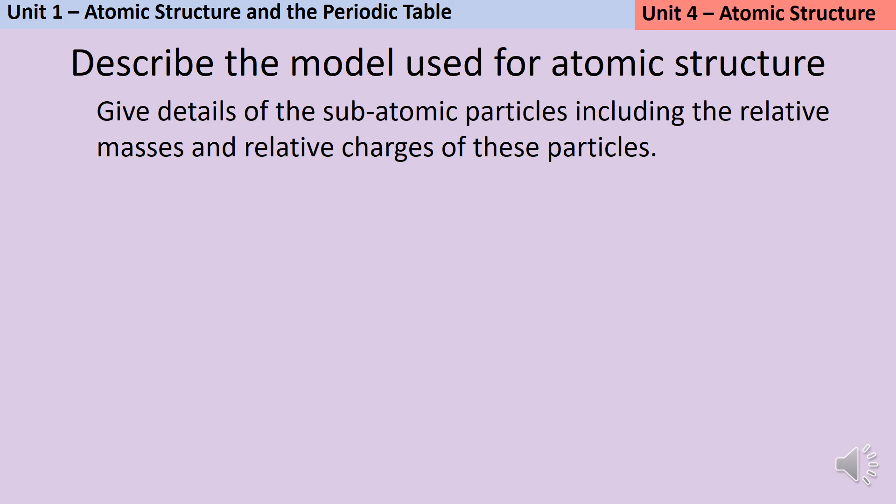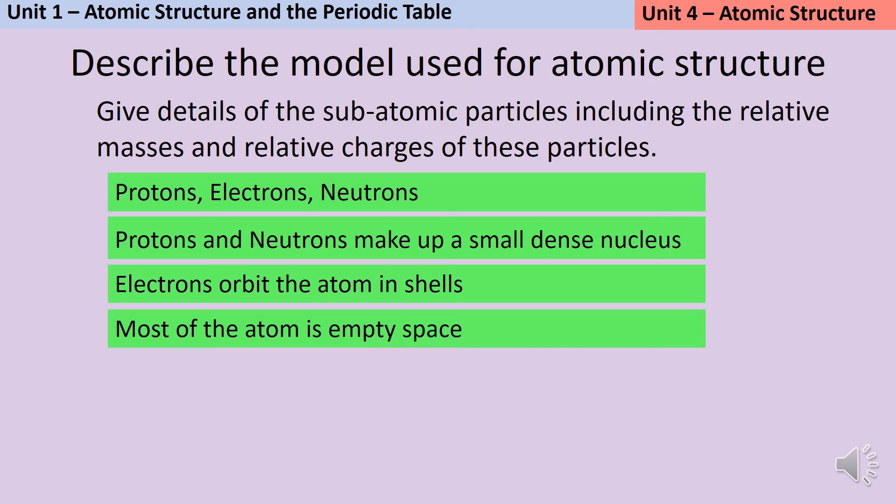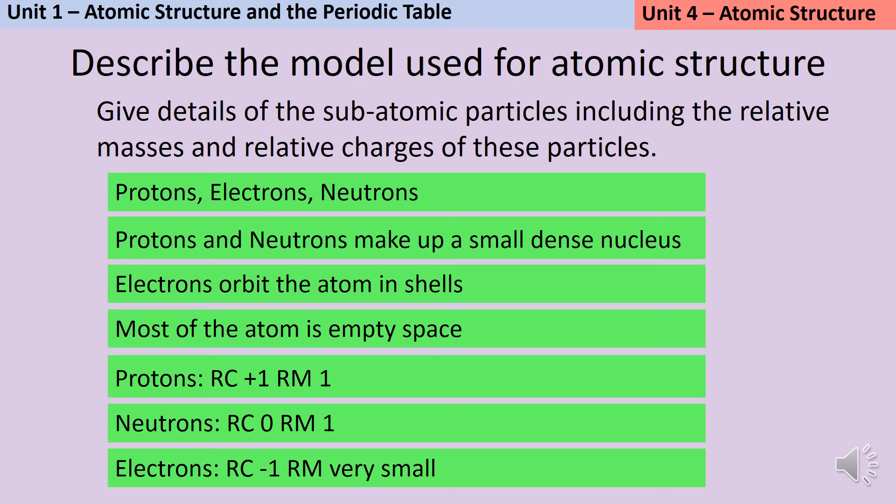Okay, so hopefully you managed to name the three subatomic particles as protons, electrons and neutrons. And you said that the protons and the neutrons together make up a small, dense nucleus at the centre of the atom. Surrounding that are the electrons which orbit in shells. Most of the atom is empty space. Remember, the nucleus only makes up one ten thousandth of the whole atom. Protons have got a relative charge of plus one and a relative mass of one. Neutrons have got a relative charge of zero, which means they're neutral, and a relative mass of one. And electrons have a relative charge of minus one and a very small relative mass. Remember, it's not zero, it's very small.